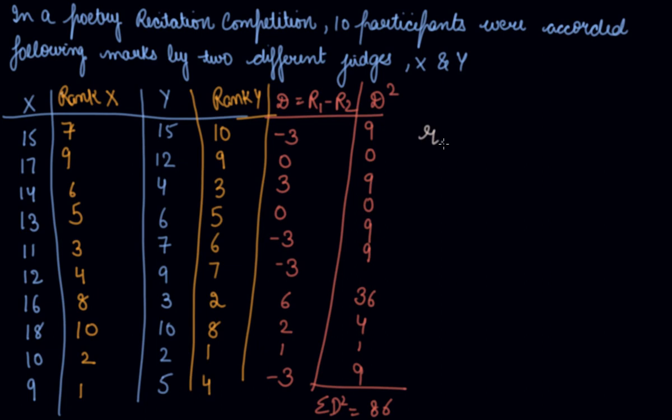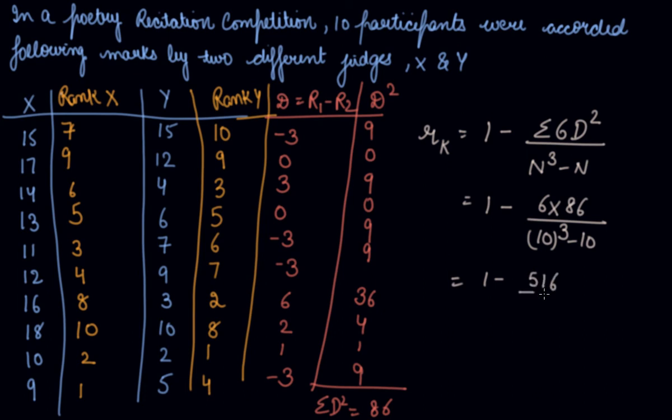Now, the formula to find out the rank correlation was 1 minus summation 6 into D square divided by N cubed minus N. So, 1 minus 6 into summation D square is 86. And how many participants are there? 10. So, 10 cube minus 10. 1 minus 516 divided by 1000 minus 10. So, you will get the answer 1 minus 0.52, which is 0.48.